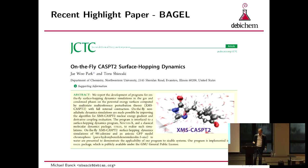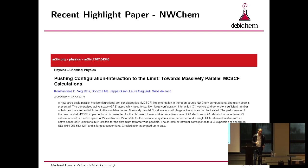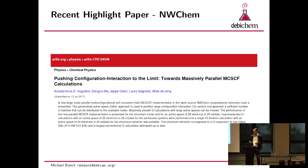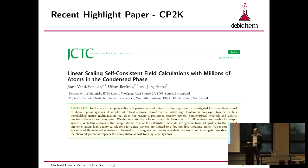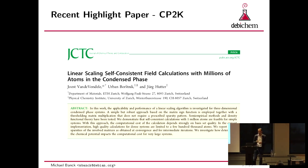Just two weeks ago they published a new part of NWCHEM, which is a huge code base from the Northwestern laboratory in the US, pushing configuration interaction to the limit — they have one trillion orbitals going on in their calculations on huge clusters. This is really competitive code. Another one from Zurich, CP2K, which is a DebiChem package for a long time — they have simulations of millions of atoms where each atom is modeled on the quantum scale with real quantum chemistry, not just spheres as in molecular dynamics.